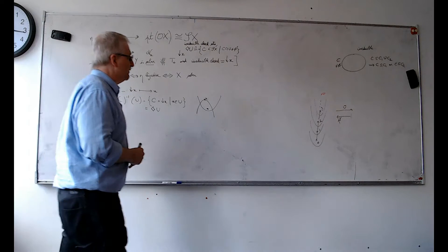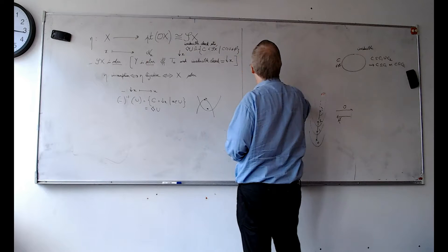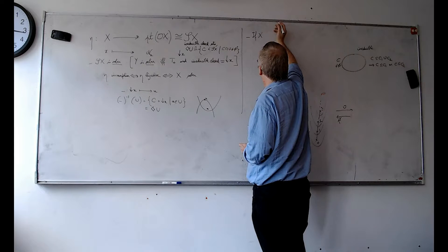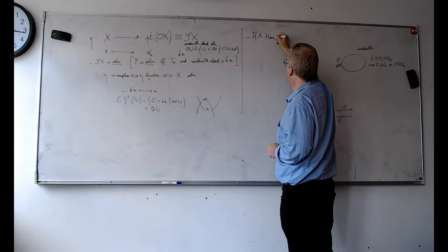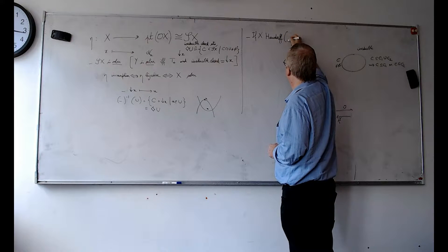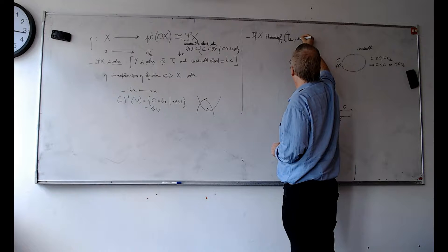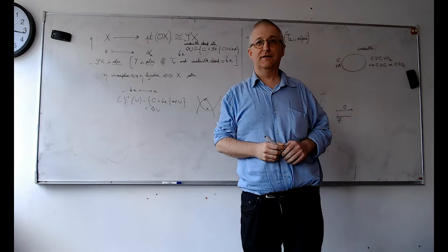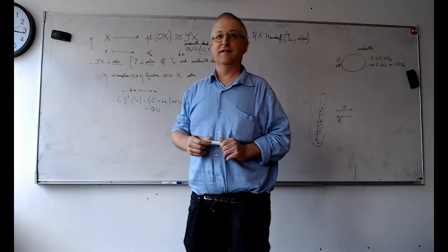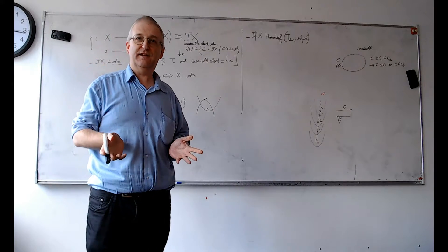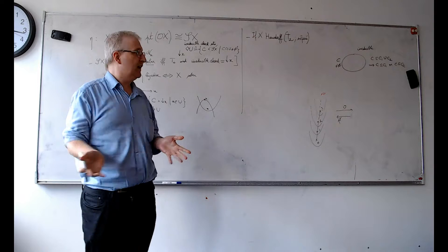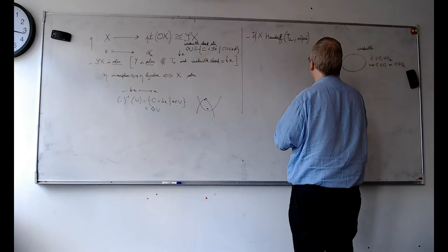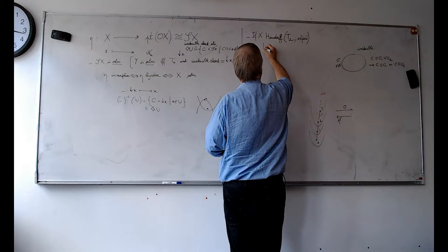Classes of sober spaces: if X is Hausdorff — sometimes called T2, in French 'séparé' — then X is sober. A Hausdorff space is essentially the only kind of space that actual topologists ever study. The ambient space is Hausdorff, assuming it's done with real numbers. In algebraic geometry there are exceptions: spectra of rings with the Zariski topology, which are not Hausdorff — and people outside algebraic geometry tend to dismiss these as 'not real topology.' In semantics and domain theory with DCPOs, spaces are never Hausdorff.